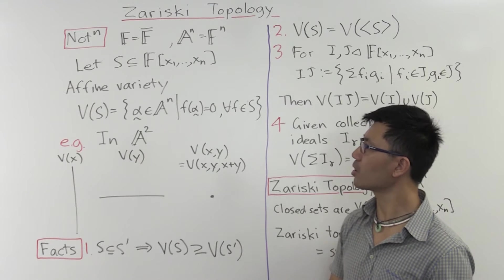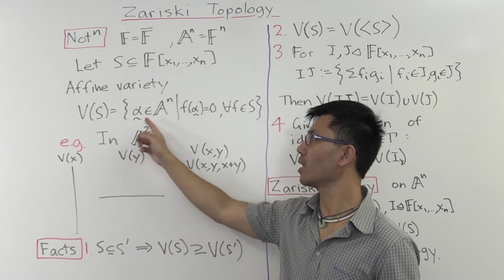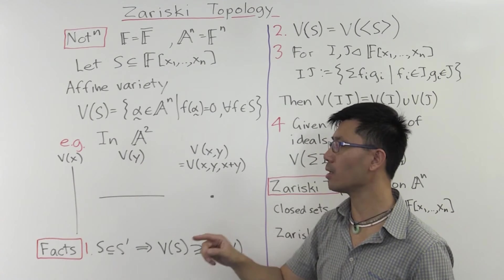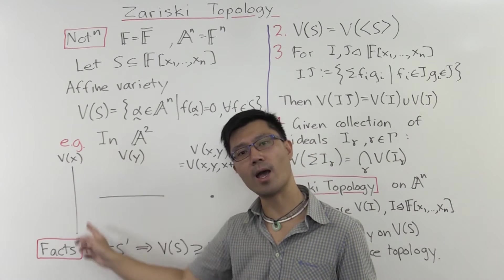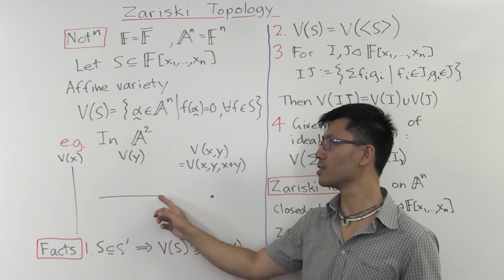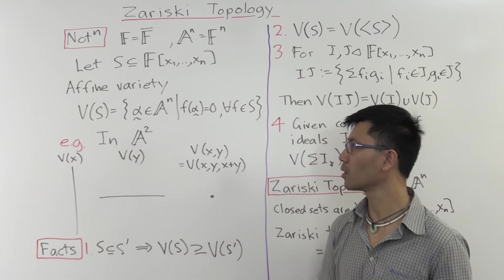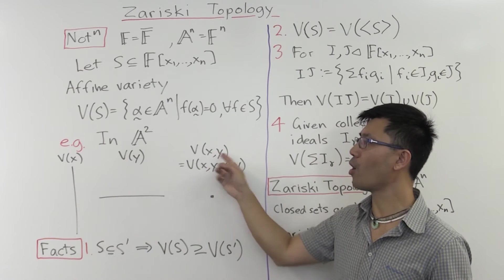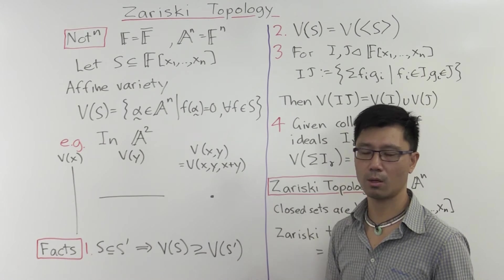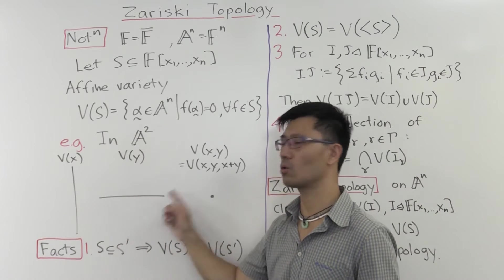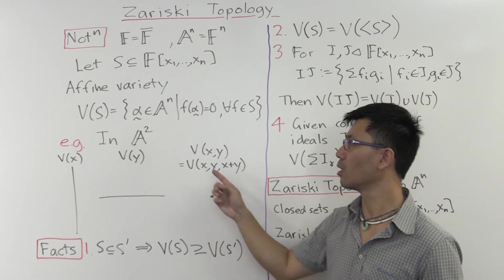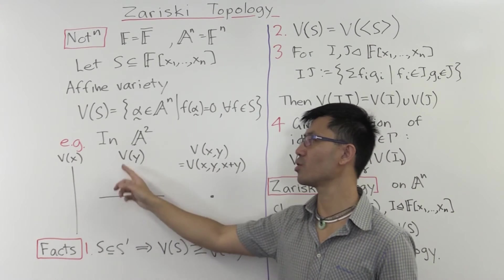Okay, so firstly, you can pick just the polynomial x inside the affine plane. So we'd say variables x and y. x equals zero, of course, just gives you the y axis. y equals zero just gives you the x axis. What if we consider both of these? If you want both x equals zero and y equals zero, that means you intersect these two and you just get the point at the origin.